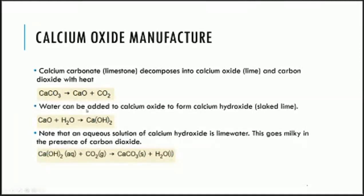Water can be added to calcium oxide to form calcium hydroxide, and this is actually called slaked lime. So calcium oxide added to water gives you calcium hydroxide. In an aqueous solution of calcium hydroxide, we call that lime water. Calcium hydroxide in solid form is basically slaked lime; if you put that into water to produce a solution of calcium hydroxide, that is called lime water. Lime water goes milky in the presence of carbon dioxide — calcium hydroxide reacts with carbon dioxide to produce calcium carbonate and water, and the solution goes milky.